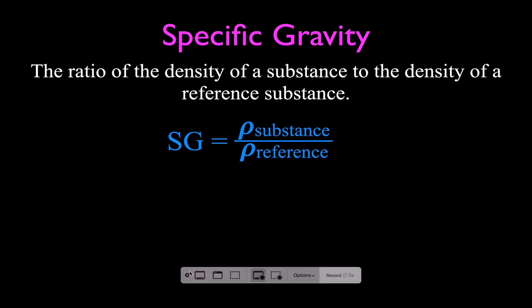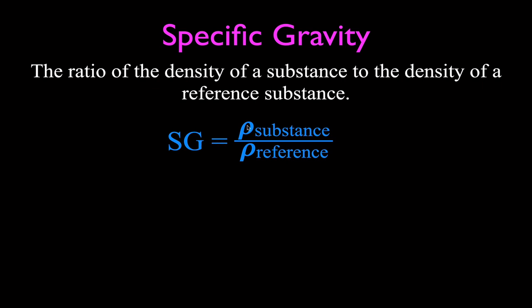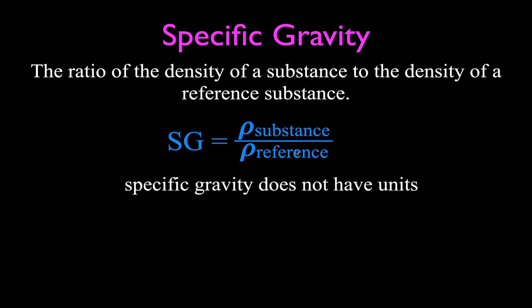The equation is: SG for specific gravity equals rho — that's the Greek letter rho, R-H-O, which is officially the symbol for density. A lot of times people use a D, but officially the Greek letter rho is the symbol for density. We have the density of the substance divided by the density of the reference substance. When you divide two densities, the value for specific gravity is going to have no units because the units cancel.